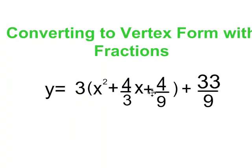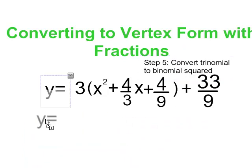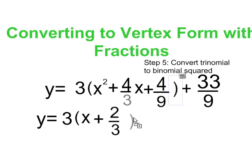And so it's just a matter of converting this perfect square trinomial into a binomial squared for the final step. And it becomes y equals 3(x plus), and of course the square root of 4/9 is 2/3, and half of 4/3 is 2/3. So I know that this is going to be 2/3. And so there's my binomial squared. And of course nothing changes here at the end, plus 33/9.